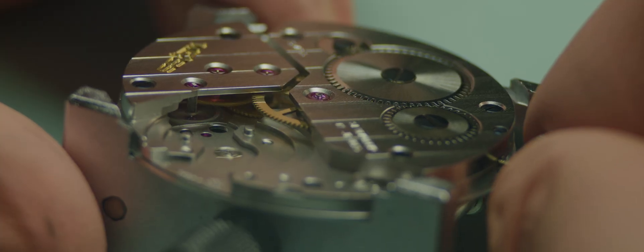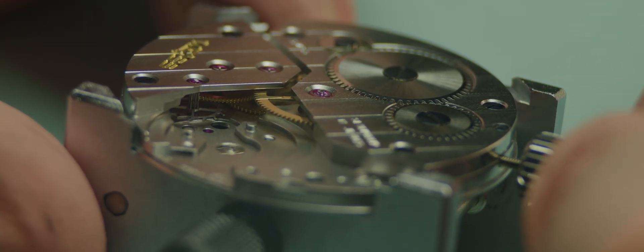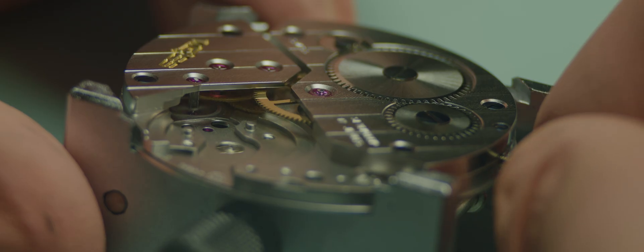From the pallet fork, you then have the escape wheel, which can be moved up and down so that the teeth of the escape wheel interact with the jewels on the pallet fork. You want the height to be just right so that the wheel never comes free from the pallet fork. Otherwise, it will just spin.